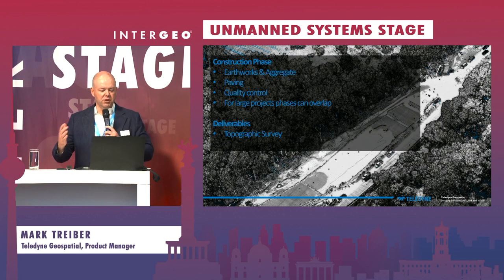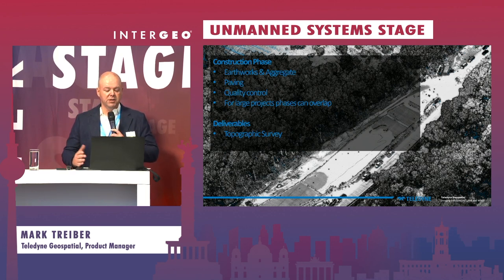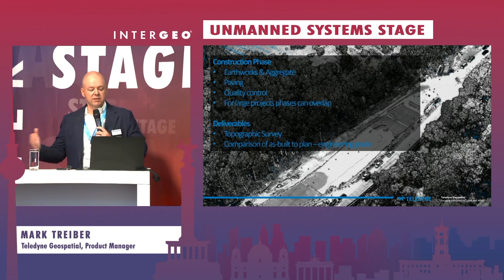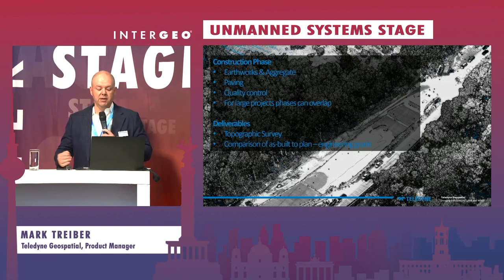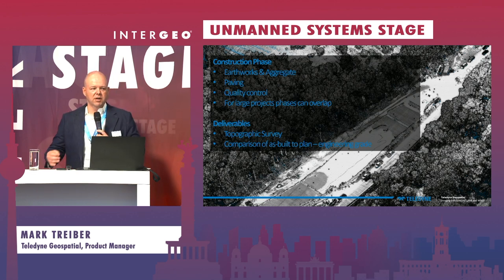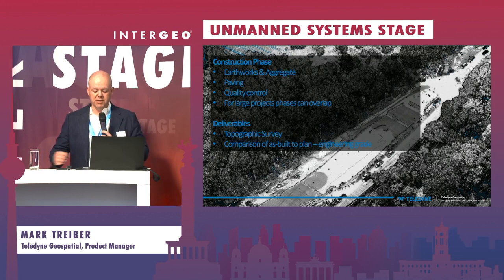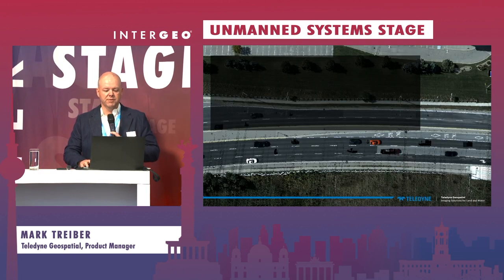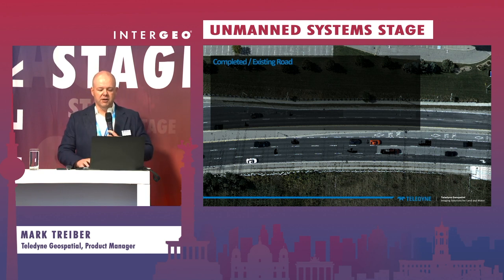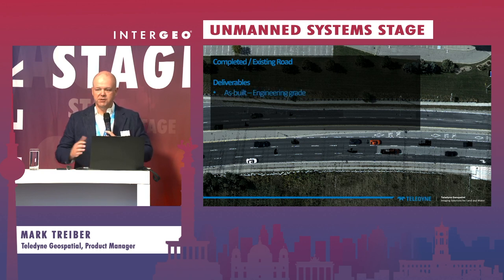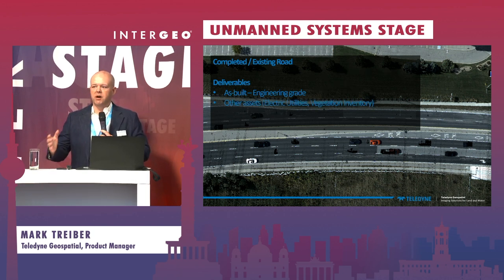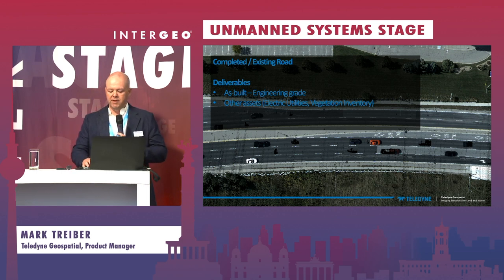For example, when you're starting with the earthworks, that's going to be primarily a lower accuracy topographic survey. As you get towards the end, when you're doing a comparison to the as-built plan, you really need engineering-grade data, which in the past has been traditionally collected through manual survey methods, terrestrial laser scanning, or mobile mapping methods. And then, once you've got a completed road and you're doing maintenance, those deliverables can include the as-built drawing at engineering-grade, as well as mapping other assets close to the road, such as electric utilities and vegetation inventory.